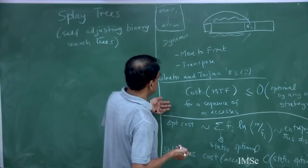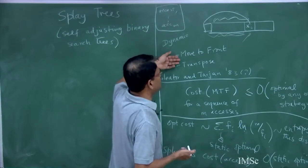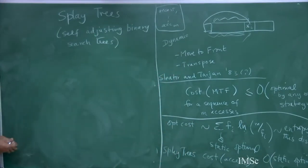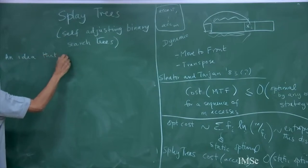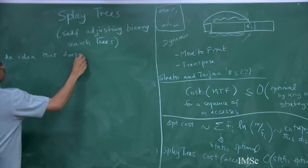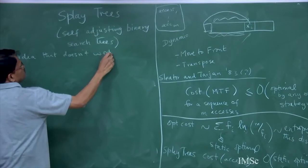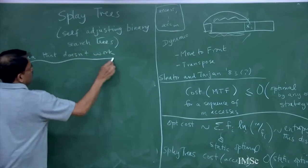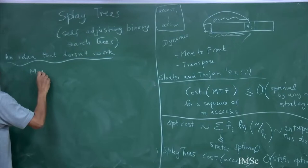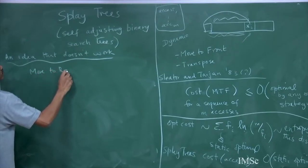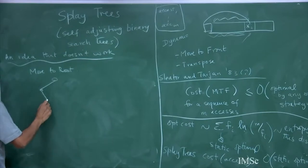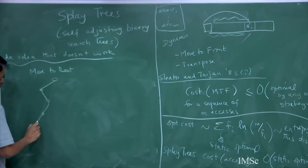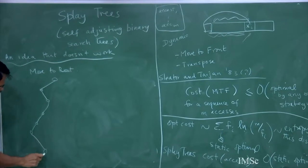One idea is something like trying to do move to front. We will try move to root. What does that mean? I am doing my search — I have this huge binary search tree and this is my search path to access a key.